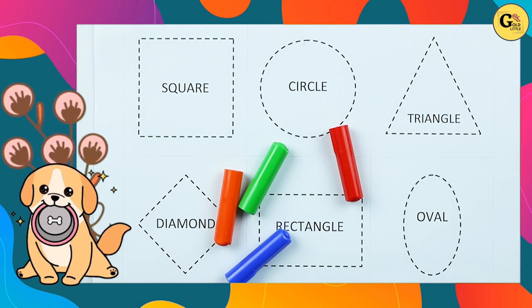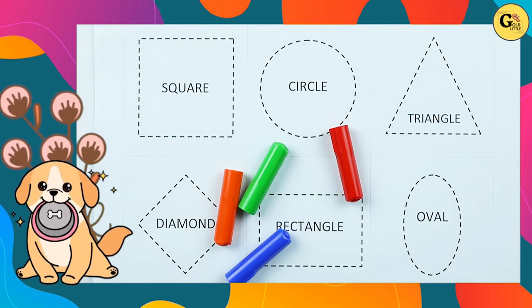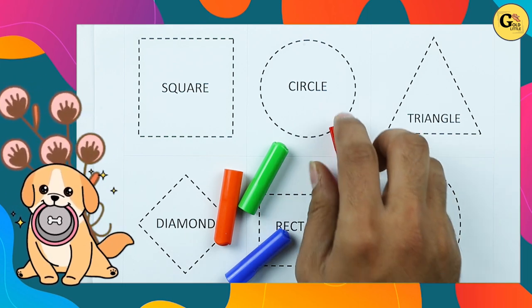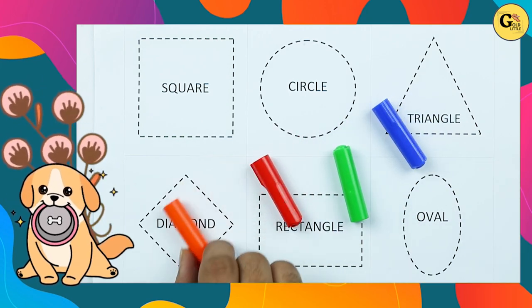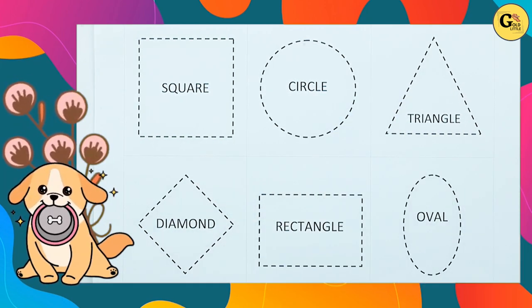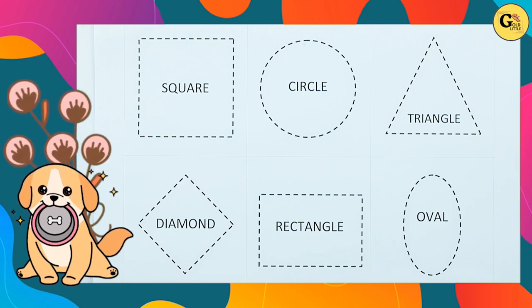Square, circle, triangle, diamond, rectangle, oval with colors: red color, blue color, orange color, green color. Let's start.